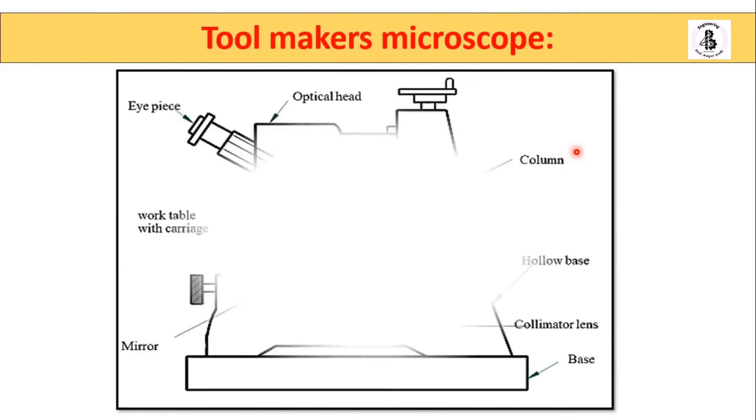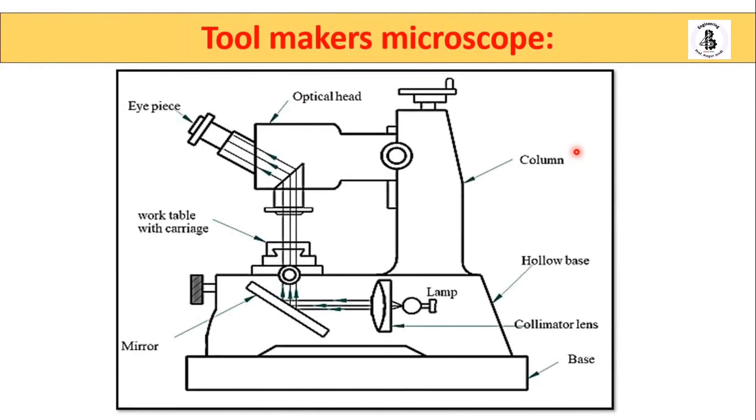In case of the tool maker microscope, basically it will be a multi-functional measuring instrument which are primarily used for inspection and measurement of miniature mechanical and electronic parts and tools. These microscopes are used to view and measure the linear distance.